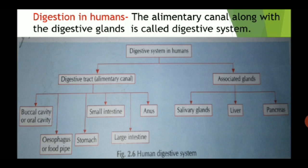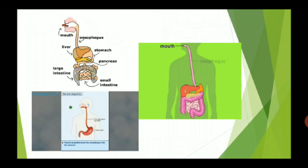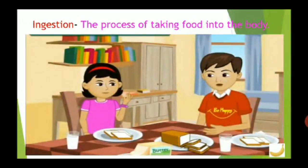The digestive system also includes the anus, salivary gland, liver, and pancreas. The food we eat passes through a long muscular canal called the alimentary canal or digestive tract, which begins at the buccal cavity and ends at the anus. The tongue, jaws, and teeth work together to grind the food. The undigested part of the food is expelled from the body. The process of taking food into the body is called ingestion.